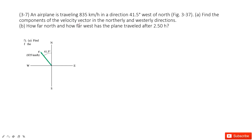In this one, it tells us an airplane — the velocity, the traverse — this is the magnitude, and in a direction 41.5 degrees west of north; this is the direction line. So it tells us the velocity, its magnitude and direction. First of all, what is the component of the velocity vector in the north and west direction, and then how far north and how far west has this airplane traveled after 2.5 hours.